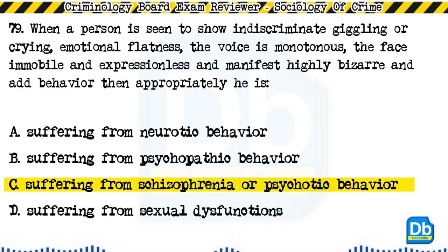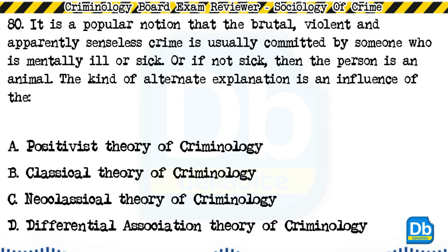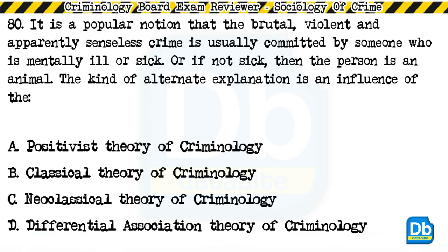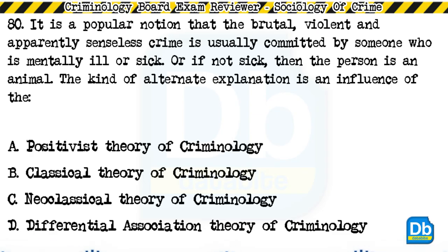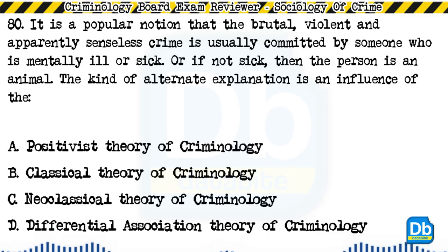Question 80: It is a popular notion that the brutal, violent, and apparently senseless crime is usually committed by someone who is mentally ill or sick, or if not sick, then the person is an animal. This kind of alternate explanation is an influence of: a) positivist theory of criminology, b) classical theory of criminology, c) neoclassical theory of criminology, d) differential association theory of criminology. The answer is A, positivist theory of criminology.